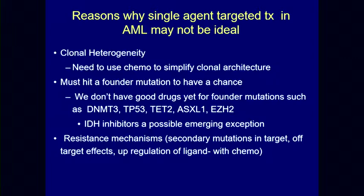FLT3 mutations are really a late hit in AML — they're not the founder mutation. So it would be naive to think that inhibiting FLT3 as a single agent would make a major impact on the disease. It might decrease the disease burden for a while, but it's not going to cure the disease. And there are obviously a lot of resistance mechanisms.